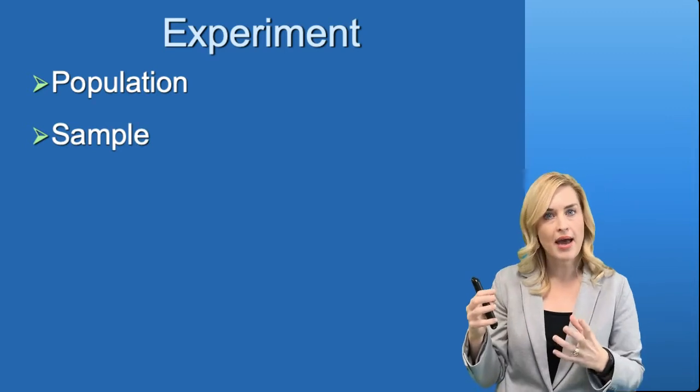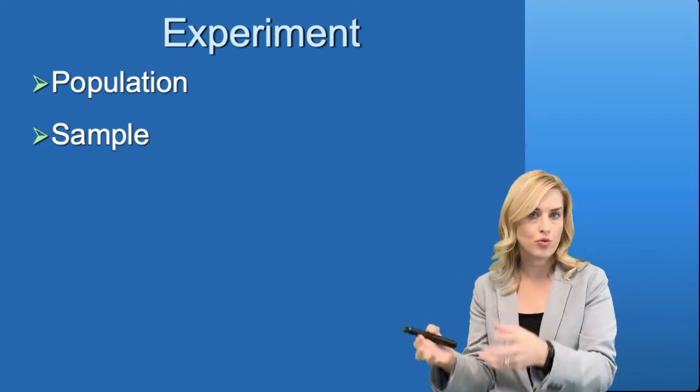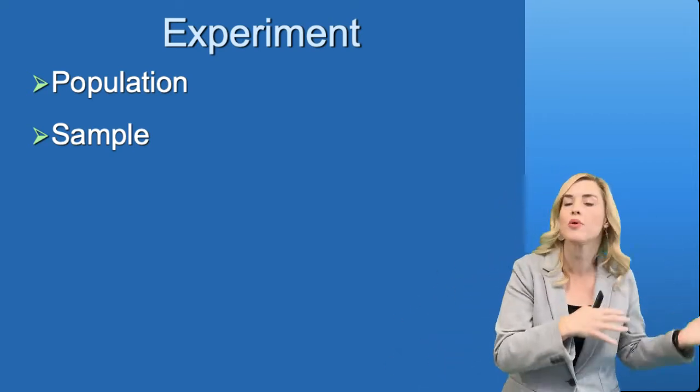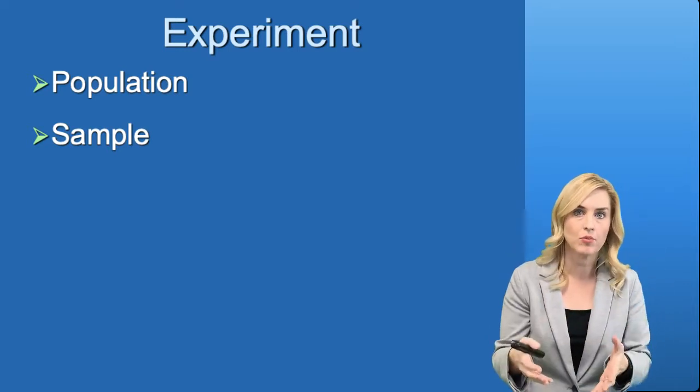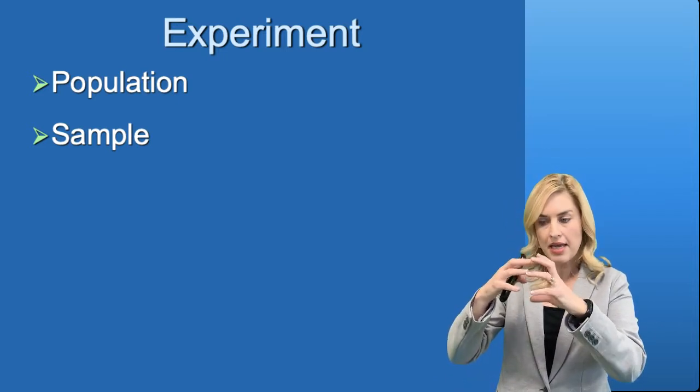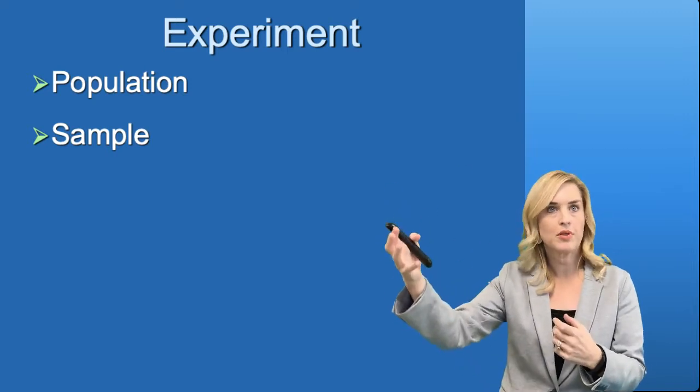If I want to look at drivers, for example, I want to be sure that my sample are also drivers as well, people who have driver's licenses. I don't want to take people who don't have a driver's license, or maybe I'm looking at a specific age range. That's going to be important too, for my sample to be within that age range, so that I can take the results of my study and apply them to the population.